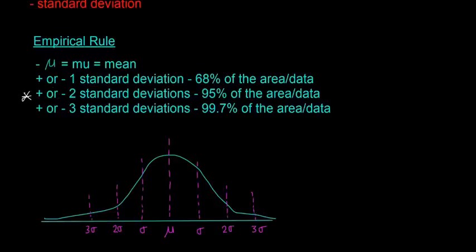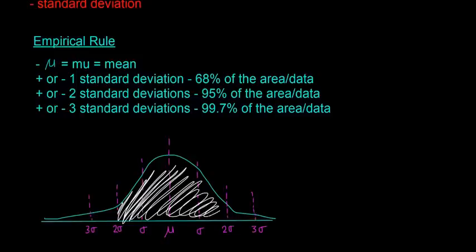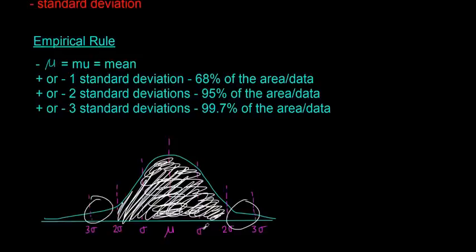Next thing it says that plus or minus two standard deviations from the mean has 95% of the area and 95% of the people or the data. So again, if we color that in here, if you look at all of this, that's going to have about 95% of the area. So again, this drawing isn't to scale. There's probably a little bit more than 5% left on the outsides there, but that's just because my drawing isn't very good.